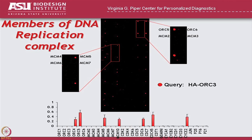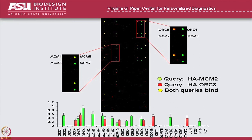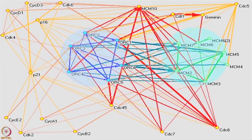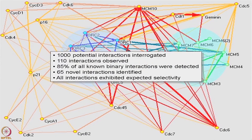You can do the same thing with a different protein — this is ORC3 — and again it's binding to certain proteins but not others. So every other protein on the array is sort of a negative control. You can merge the two images to build an interaction map for all the proteins in the complex with all the other proteins. We queried over a thousand possible interactions and identified 110 of them, including many new ones, using this general approach.